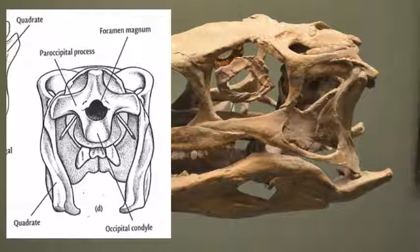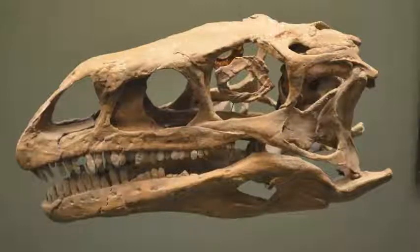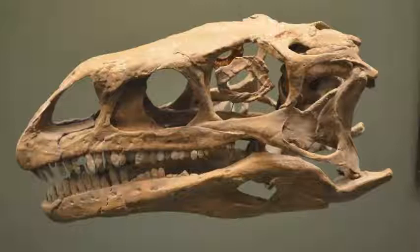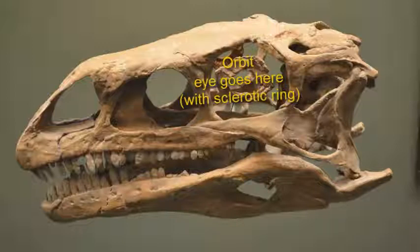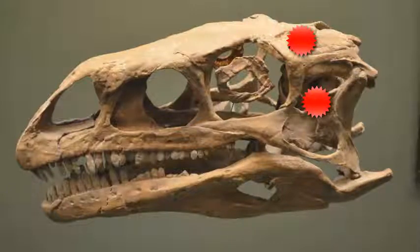Unlike mammals, which have two, dinosaurs have a single occipital condyle. Near the back of the skull are the quadrate and quadratojugal bones. Note that in dinosaurs there are multiple openings in the skull: the most anterior are the nares for the nostrils, the antorbital opening along the side of the nose, the middle one is the eye socket or orbit, and in the back there are two openings separated by the postorbital and squamosal bones. We will talk about the importance of these openings in a later video.